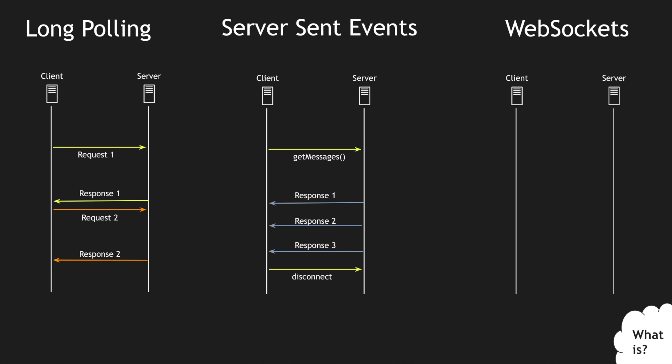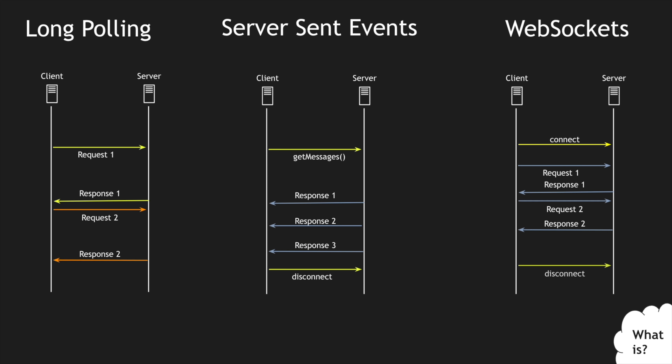The final one is WebSockets. WebSockets again use a similar client-server architecture where the client has to initiate a request. Once the client initiates the request, similar to SSE, we create a channel between the client and the server, but within that particular channel you can have bi-directional flows. There could be a single request and multiple responses, or multiple requests and multiple responses, and these are asynchronous. This is where WebSockets are different from the other two because it is a completely different protocol.